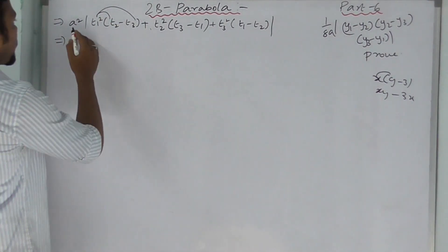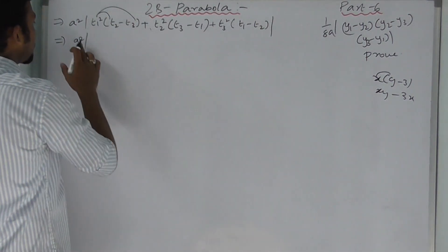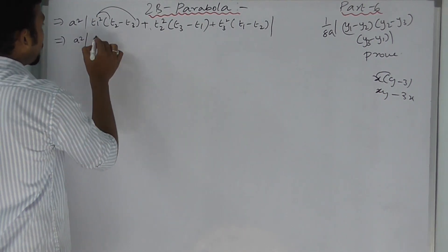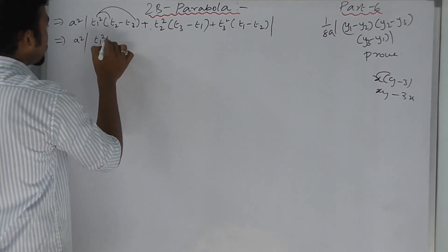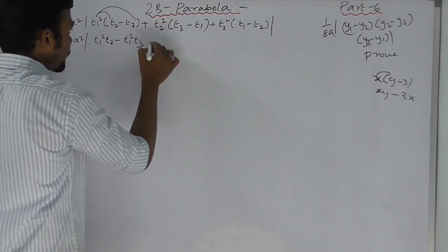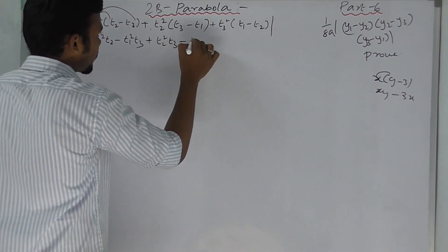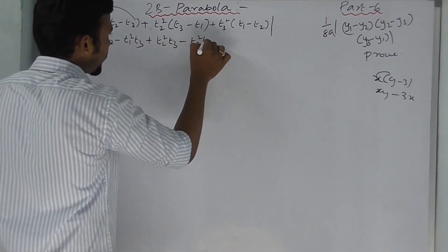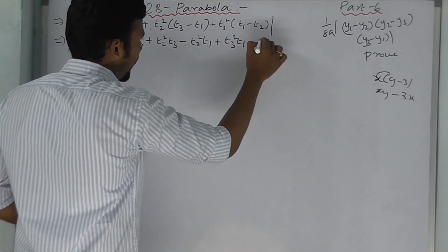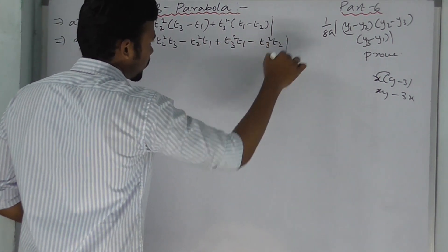After expanding, we get: t1²·t2 − t1²·t3 + t2²·t3 − t2²·t1 + t3²·t1 − t3²·t2.